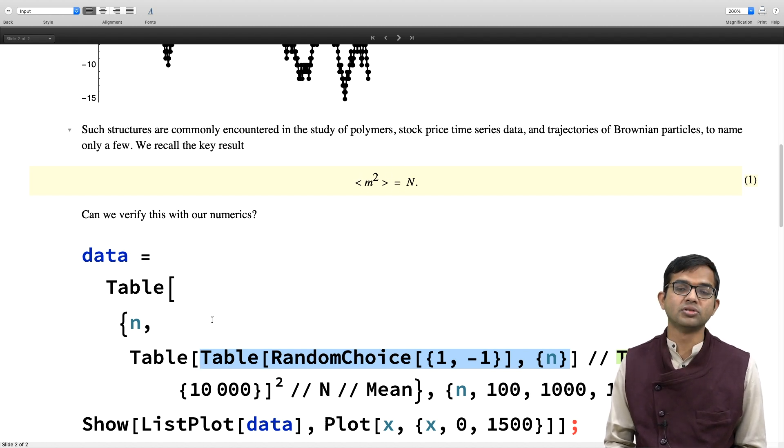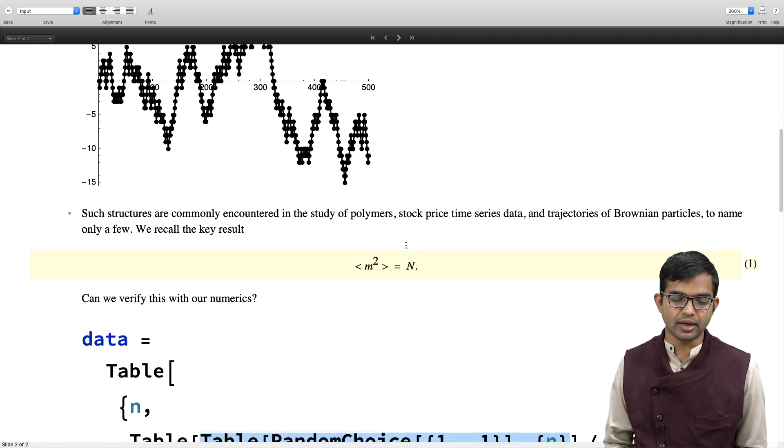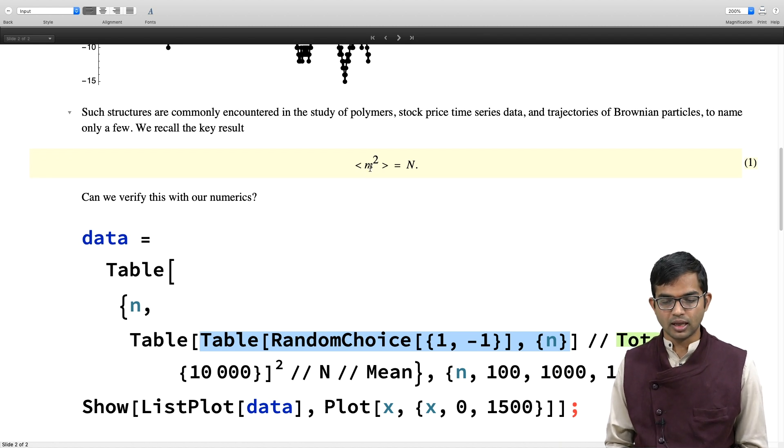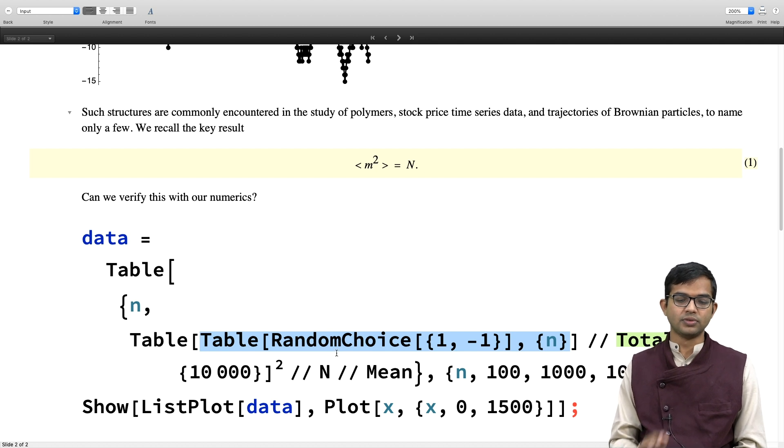I create 10,000 such m's. The sum is where I am after n steps, with n going from 100 to 1000 in steps of 100. For every value of n, I evaluate this and compute the average over 10,000 samples. I'm generating 10,000 random walks, and for each I compute m squared. I can take the square of a whole array, then compute the mean of that quantity.